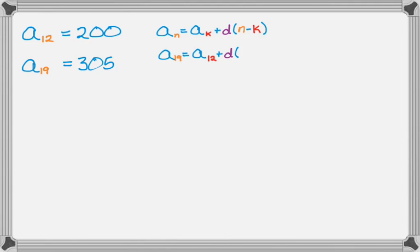We're going to plug in and go through the process. I really just want to find d. So 305 = 200 + 7d, which means 105 = 7d, so d = 15.